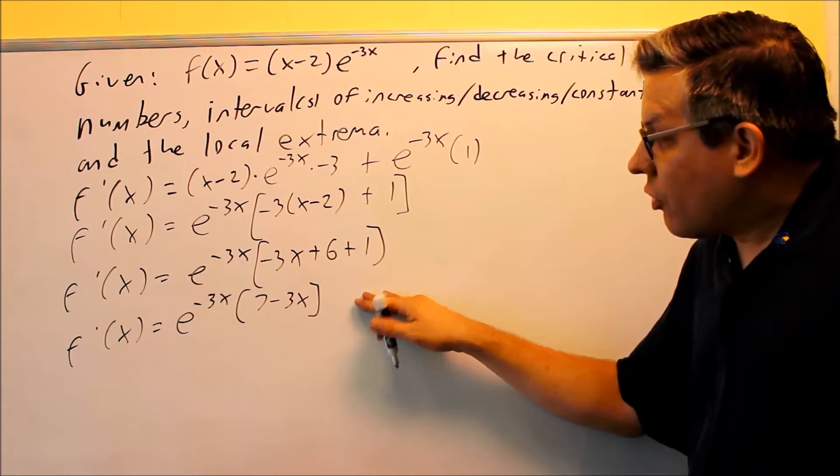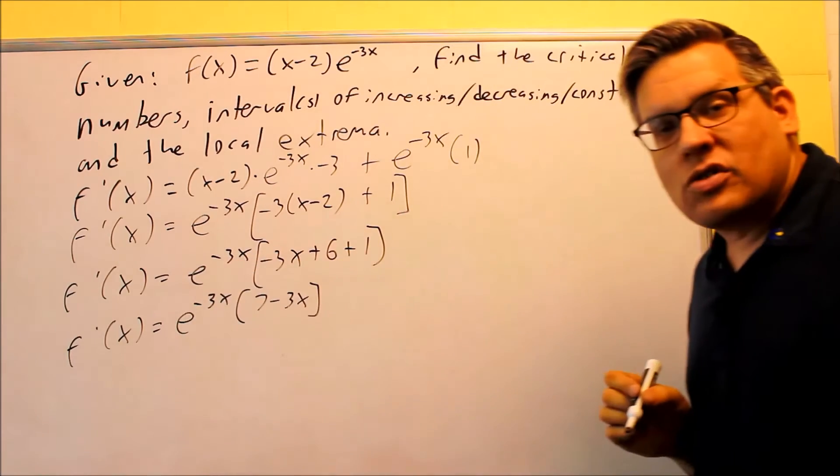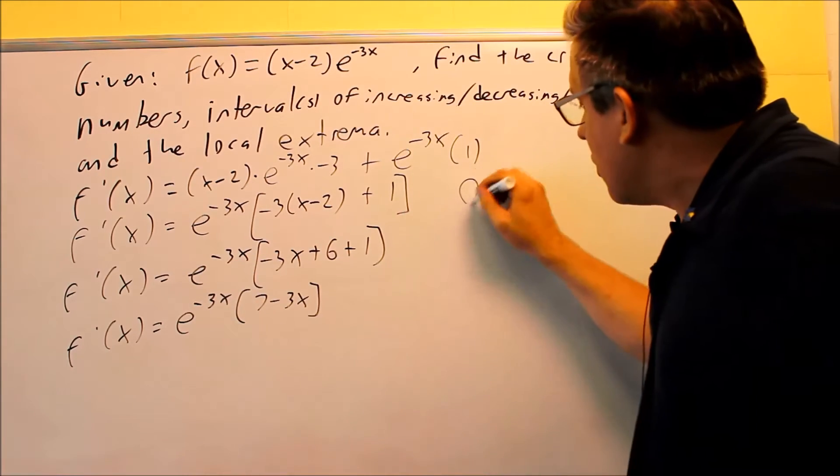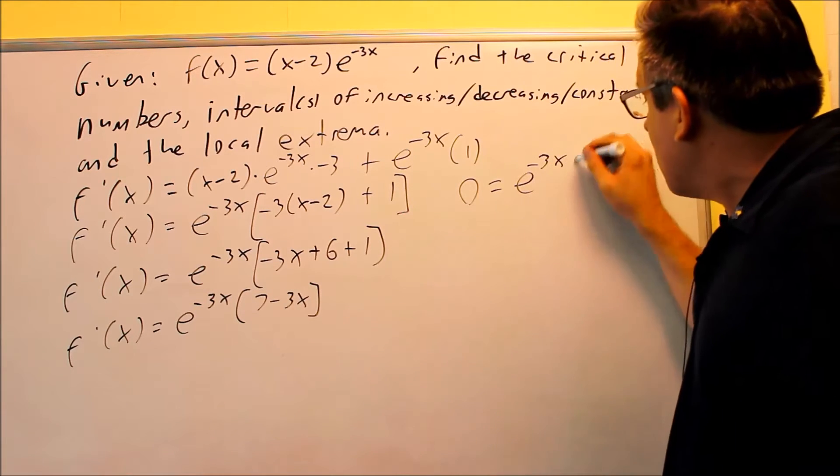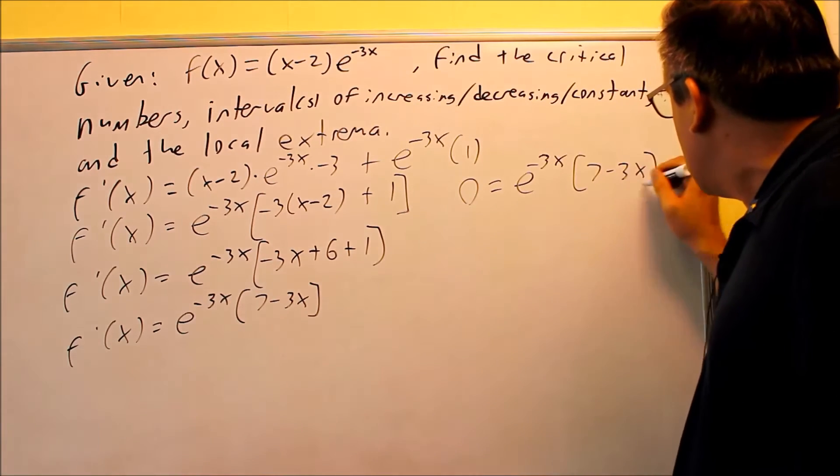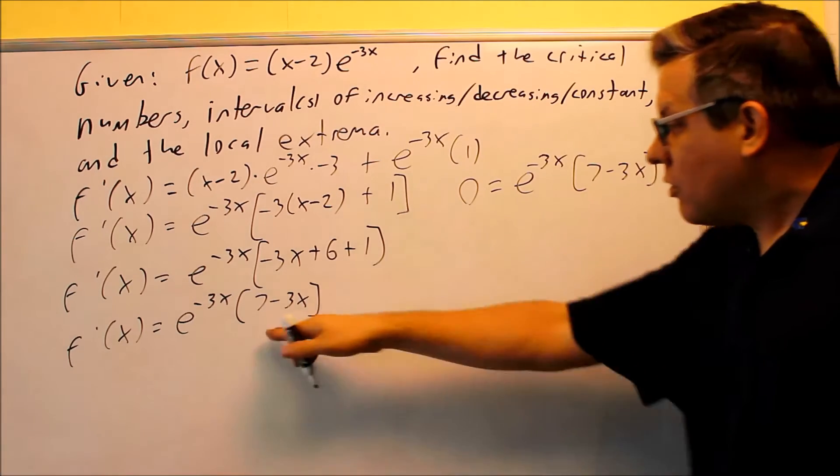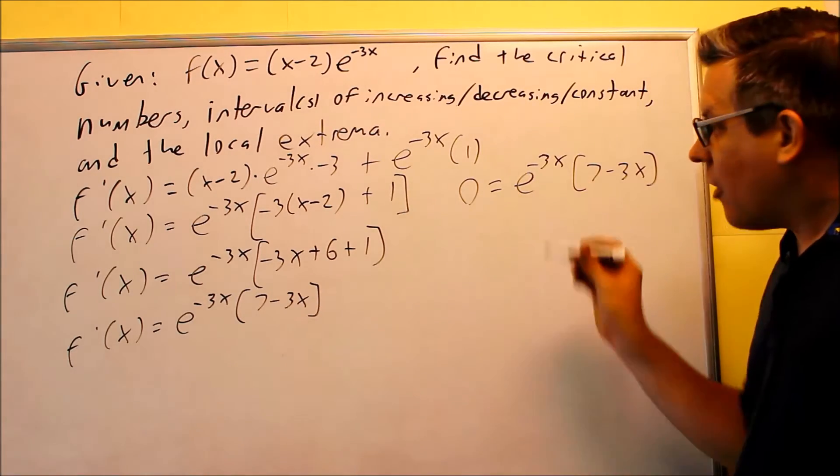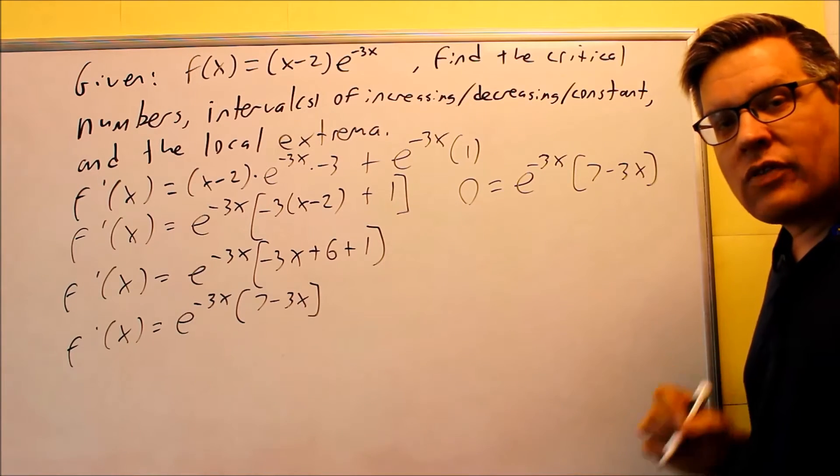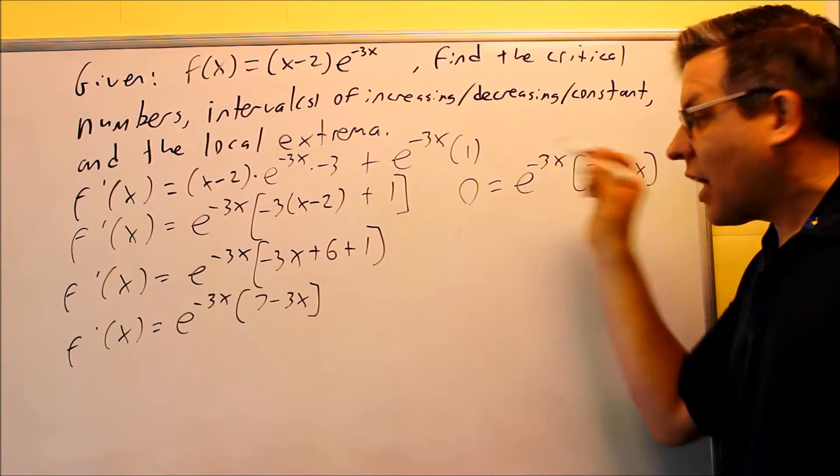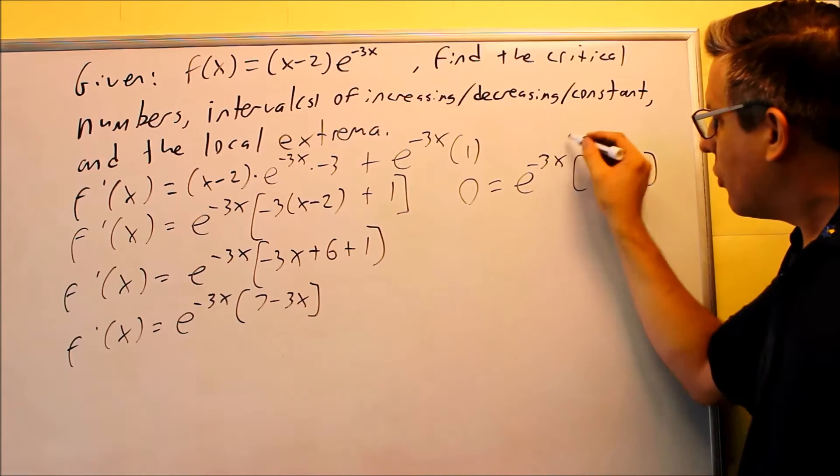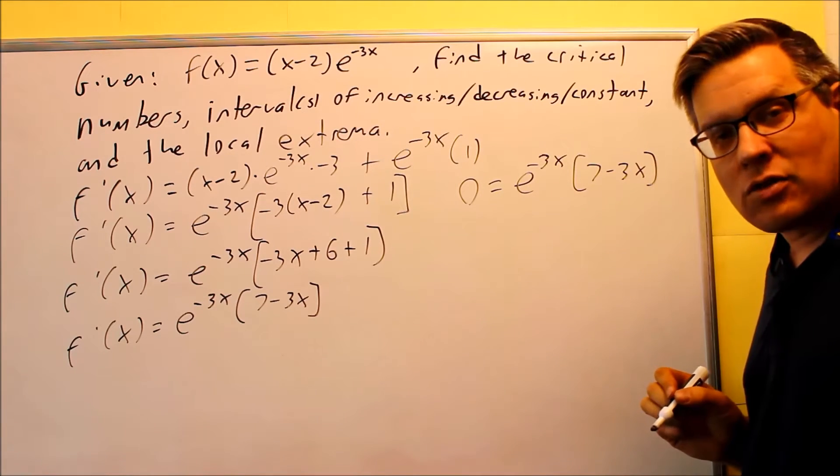And then the second thing we're going to look for is we're going to take this and set it equal to 0 to find the other critical number. So 0 equals e to the negative 3x, and then that's going to be times 7 minus 3x. We're setting this equal to 0. Now if I take the first one and set it equal to 0, I would have to take the natural log of both sides. And if I try and do that, I can't take the natural log of 0. So therefore, this first piece is not going to give us any answers.